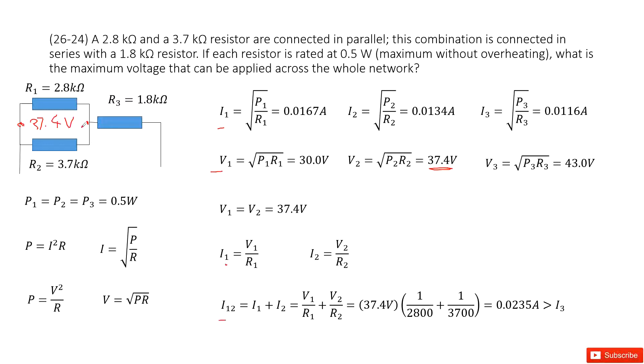So that means I1 plus I2, that is the current that can go through R3. We add them together. Wow, this number is larger than the standard current for R3. It is larger.